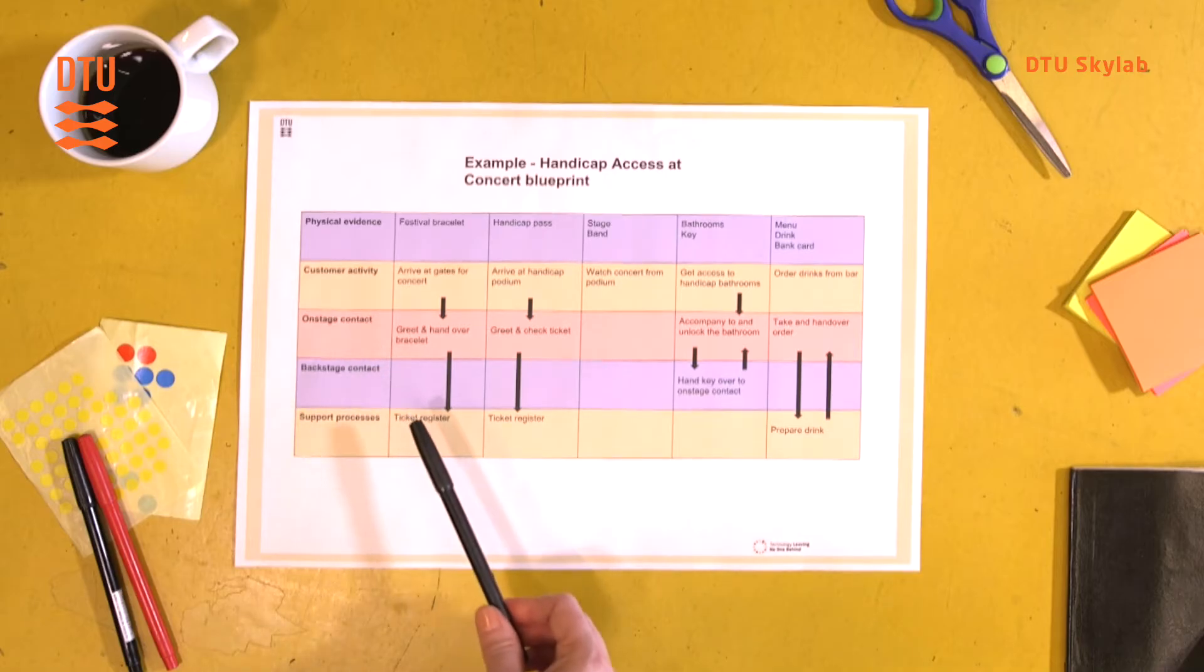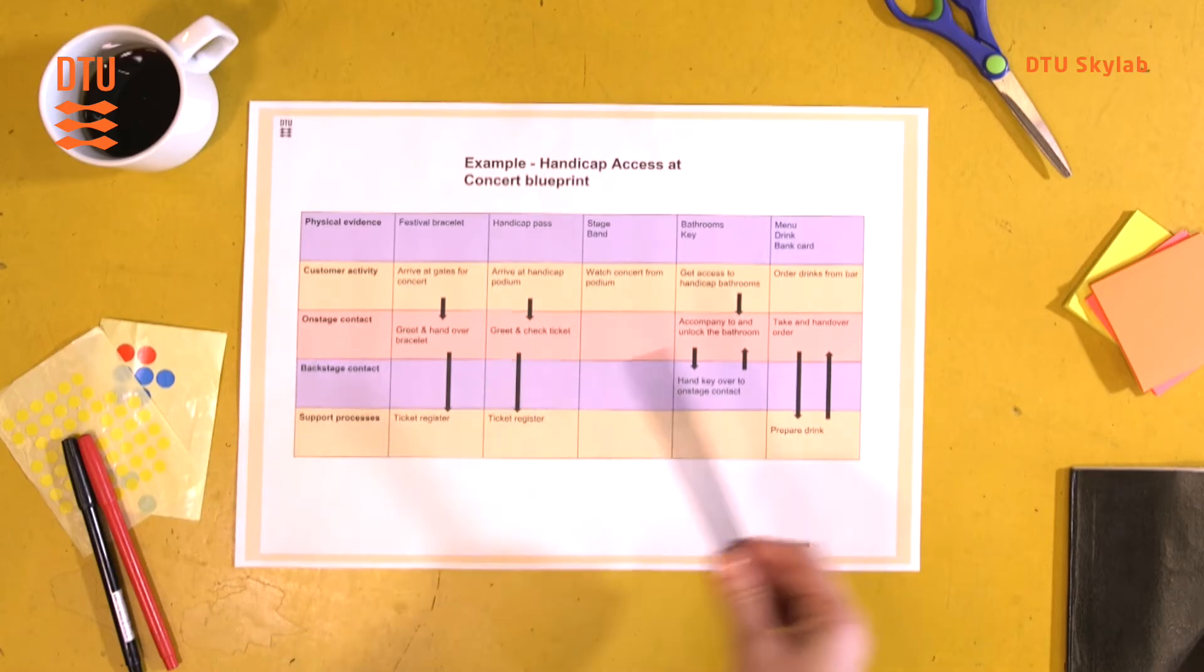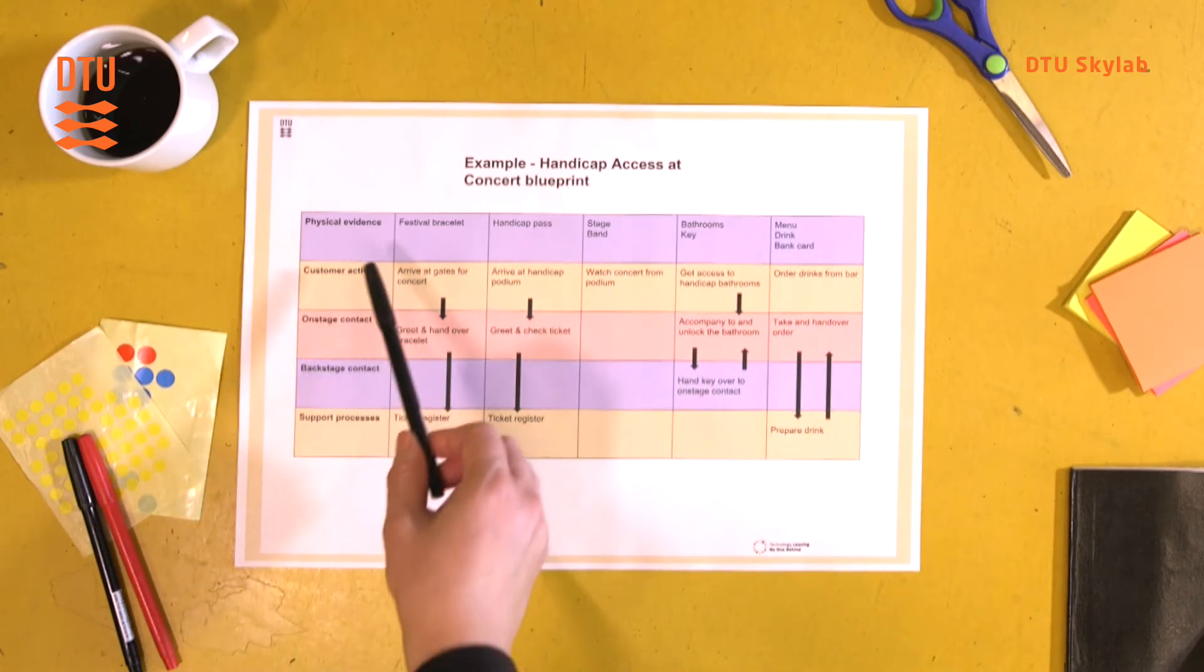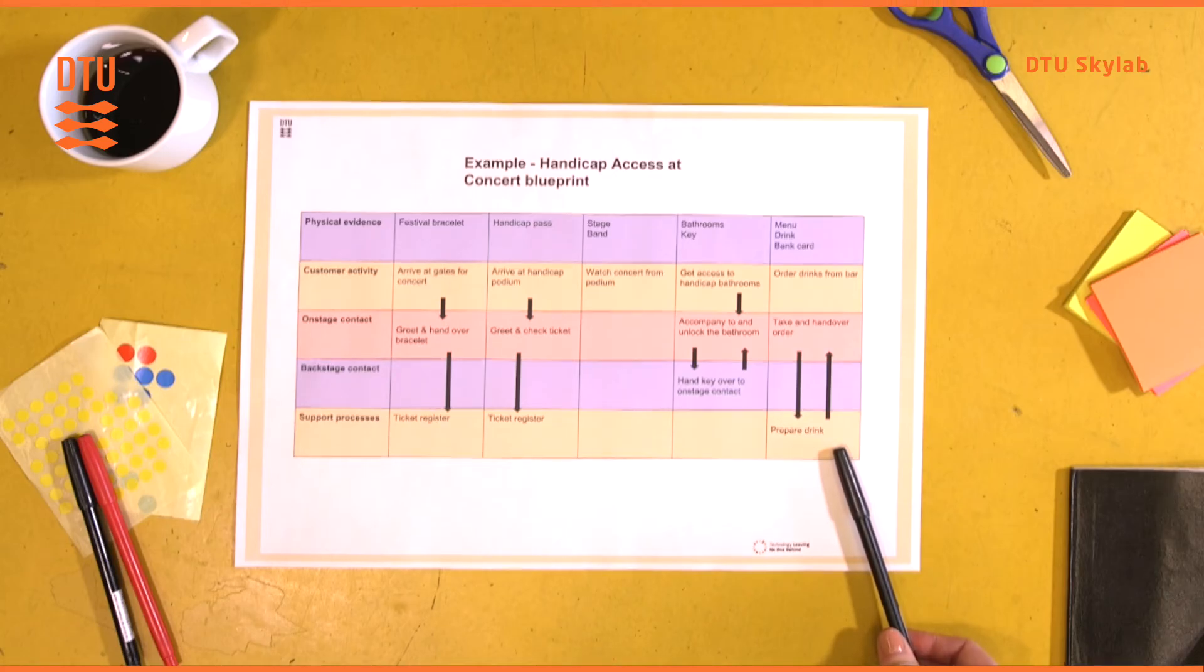You can also use it to show others how your system works. And it's also a really useful tool in a workshop context where you might have either users or other participants filling it in and maybe identifying other items in the blueprint that you might not have put in there as the designer. So that's how this is optimally used.